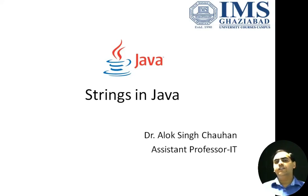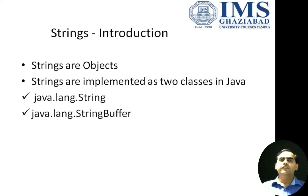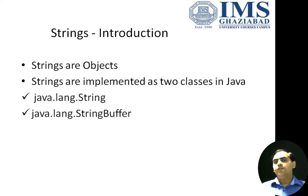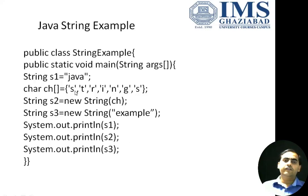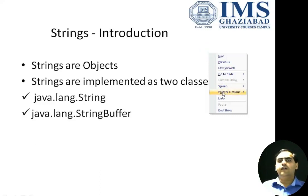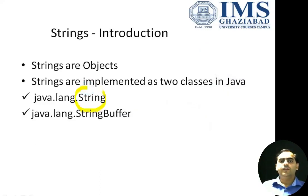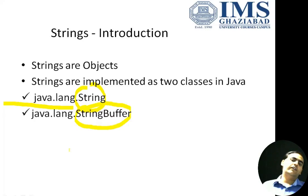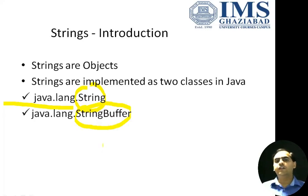The topic for today's lecture is Strings in Java. Strings are a sequence of characters, and in Java, strings work as objects. Strings in Java can be implemented using two classes: the String class and the StringBuffer class. Both classes are stored in the java.lang package, which contains all basic classes.